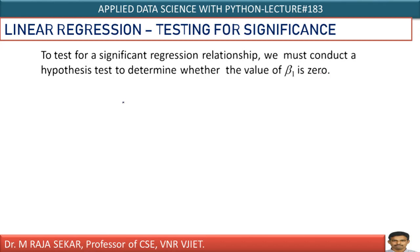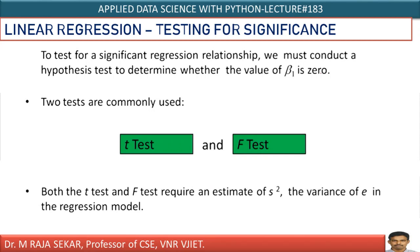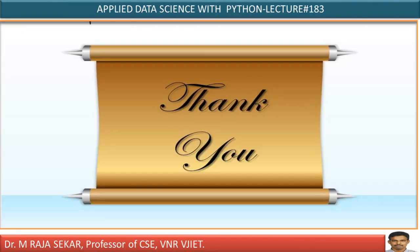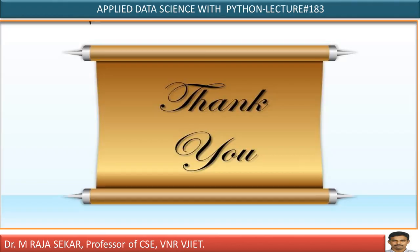One method is the t-test and another is the f-test. Both t-test and f-test require estimation of S-squared, which is called the variance of the error. If you say capital S, it is the standard error. In my next lecture, we will try to understand this f-test and t-test. Thank you very much.